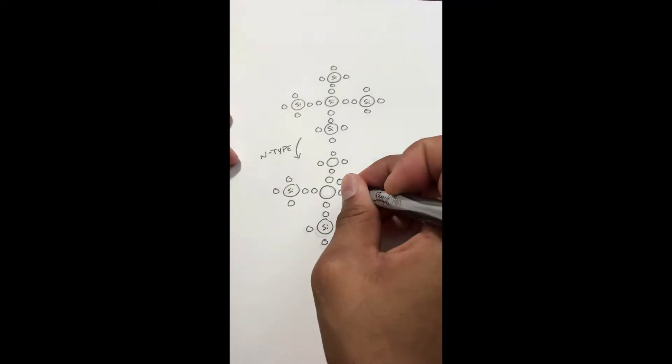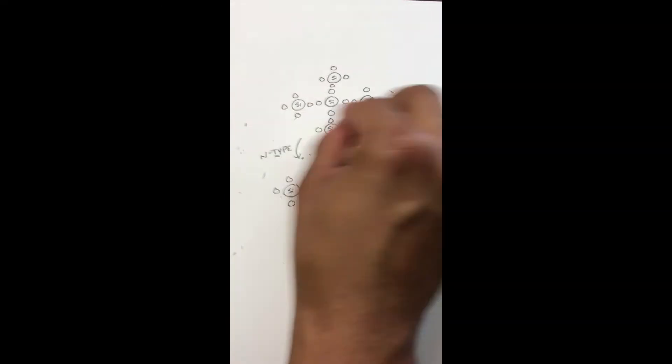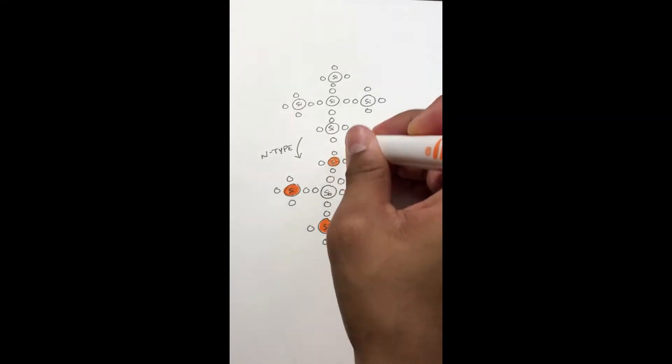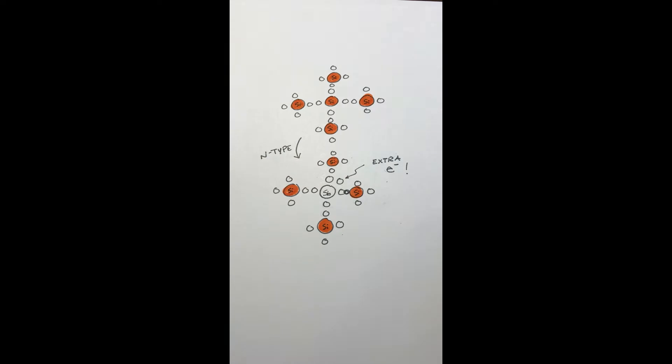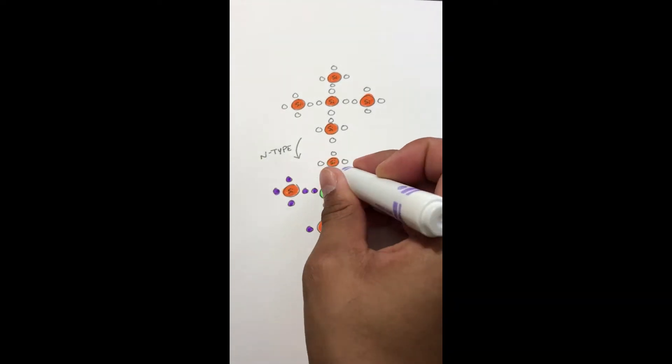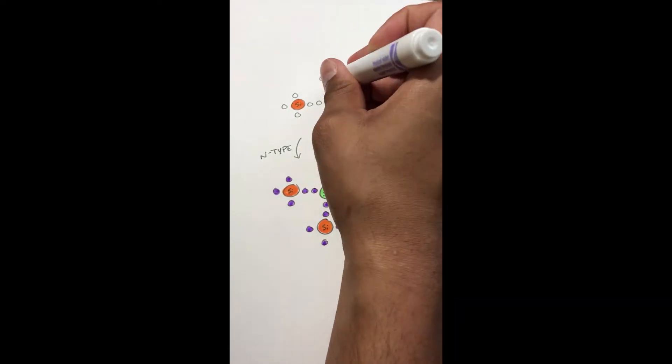For example, look at five silicon atoms each with four valence electrons. Let's take out the central silicon atom and replace it with an antimony atom which has five electrons in the valence band. When this foreign atom is added to the crystal lattice of silicon there is one extra electron which is free to move around.